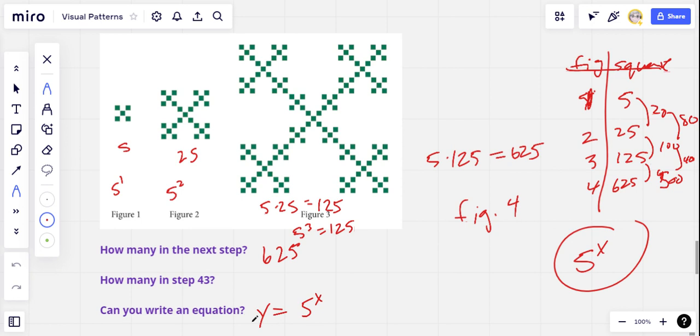And then to figure out how many in step forty three is pretty easy. If you have a calculator, if you don't, you might be in trouble. We're just going to say Y equals five to the forty third. And I'm not going to punch in, you know, give you the whole exact answer here. It's a lot of numbers. But rounding off, I'm going to say one point one three seven times ten to the thirtieth.